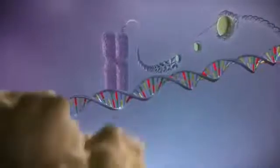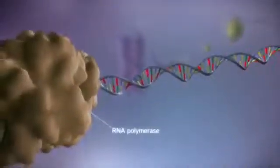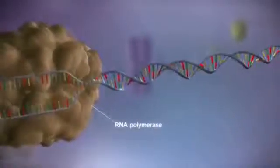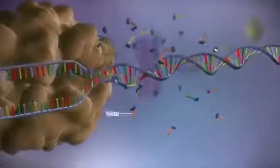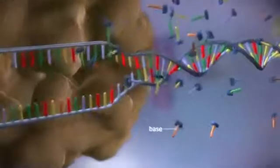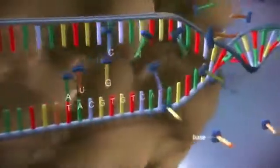When a gene is switched on, an enzyme called RNA polymerase attaches to the start of the gene. It moves along the DNA, making a strand of messenger RNA out of free bases in the nucleus.